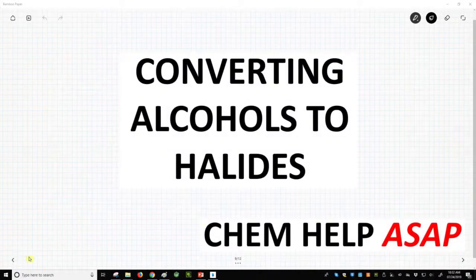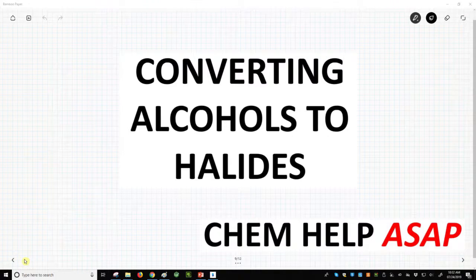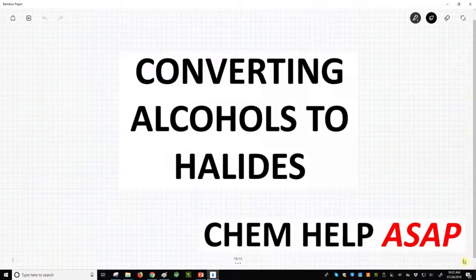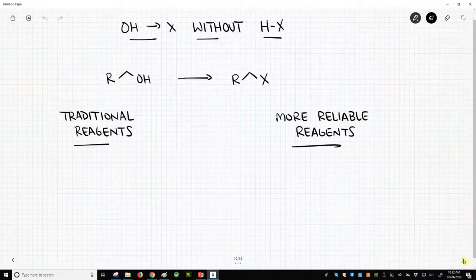Good day from Chem Help ASAP. We know how to convert an alcohol into a halogen using something like HX, but sometimes you want to use different reagents. There are actually other reagents that allow this transformation, so we're going to talk about non-HX methods for converting alcohols to halogens.